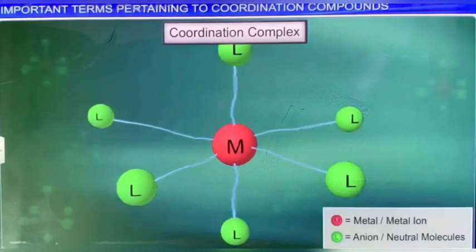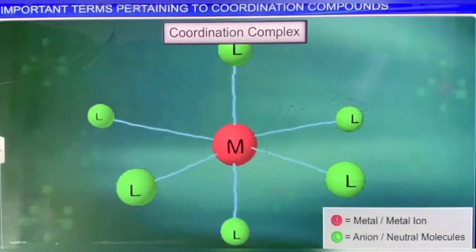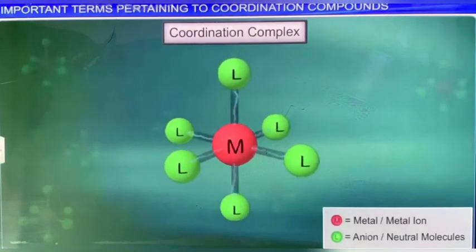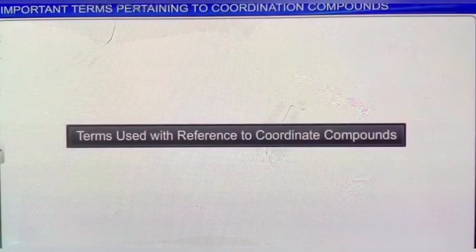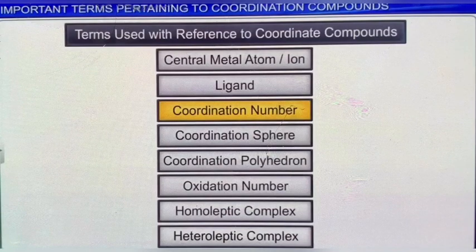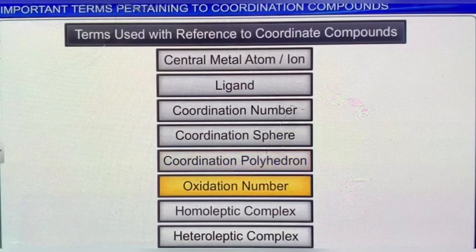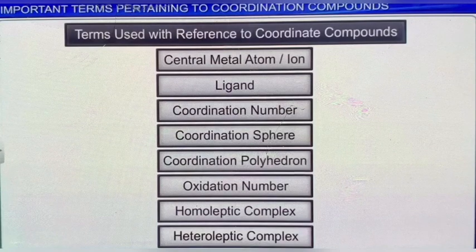A coordination complex is the product of a Lewis acid-base reaction, in which a central metal atom or ion forms coordinate covalent bonds with neutral molecules or anions called ligands. Similar to the terms central metal and ligand, there are some other terms like coordination number, coordination sphere, coordination polyhedron, oxidation number, homoleptic complex, and heteroleptic complex, which are used with reference to coordinate compounds. You must get familiarized with these terms to understand different aspects of coordination chemistry. Let's go through these terms in detail.